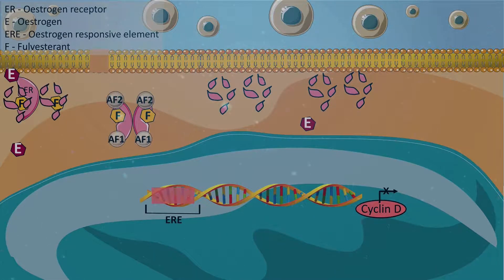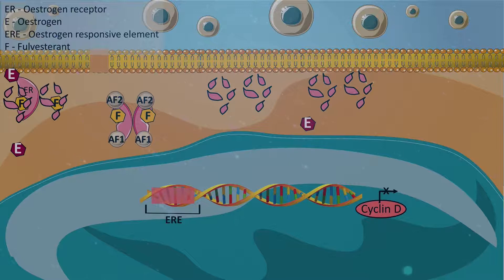Fulvestrant binding leads to unstable complexes, which leads to accelerated degradation of the ER, thus reducing its availability for estrogen binding.